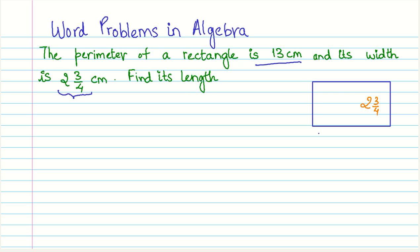So, I have made the rectangle over here and we know that this width or breadth, you call it, is 2 and 3 fourths centimeter. But we don't know the length, right? So, we will just assume that let the length be L. That is what we usually denote the length of rectangle as.